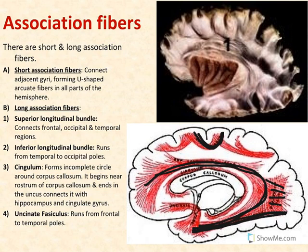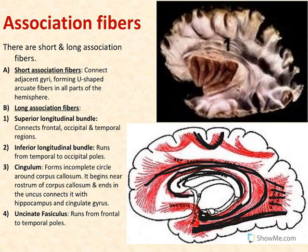The cingulum forms an incomplete circle around the corpus callosum. It begins on the anterior part of the corpus callosum, which is called the rostrum, then runs upward to the genu, then the body of the corpus callosum, and continues to reach a structure called uncus on the temporal pole. The cingulum is part of the limbic lobe, running on the medial surface. The uncinate fasciculus joins the frontal and temporal poles of the brain.